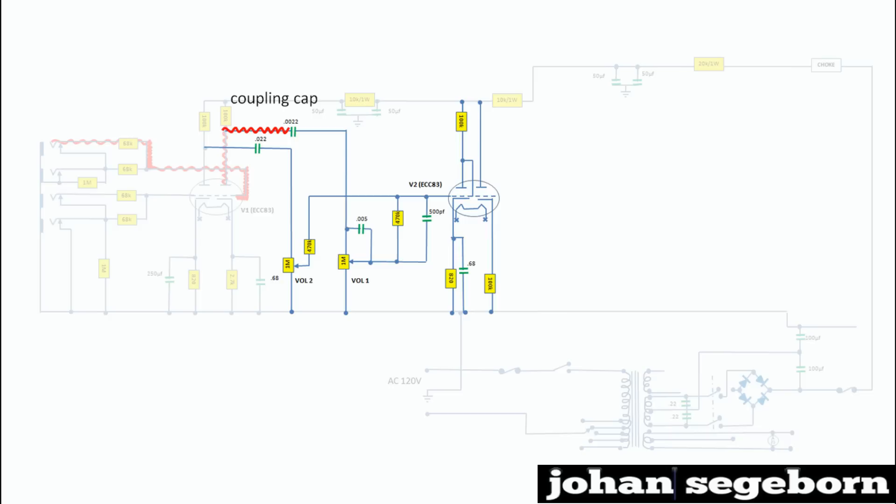Where the tube is neither cut off nor saturated. So only AC passes through the coupling cap. The signal passes through the volume pot circuit of channel 1 and reaches the grid of the second pre-amp tube.